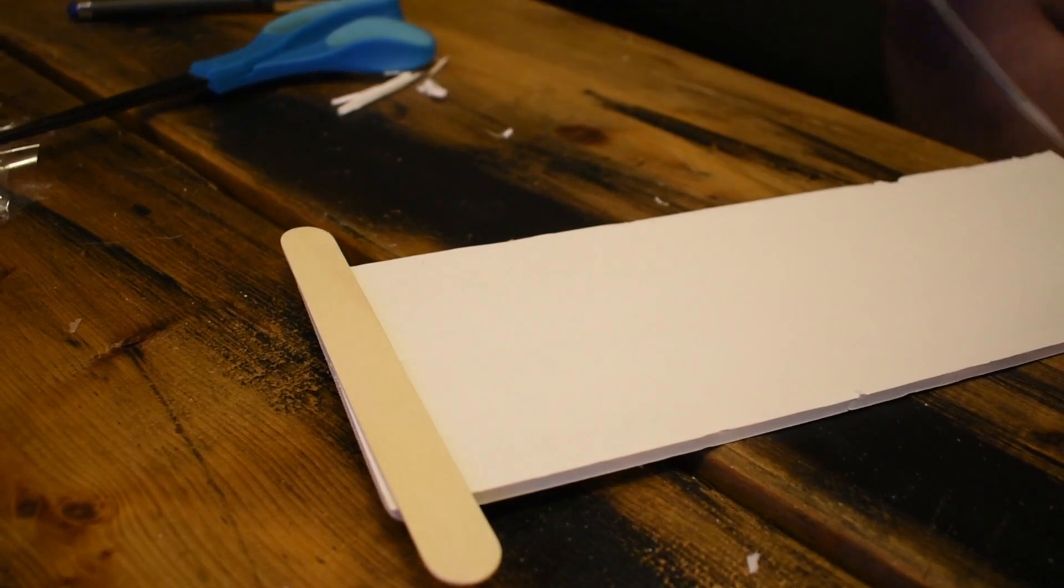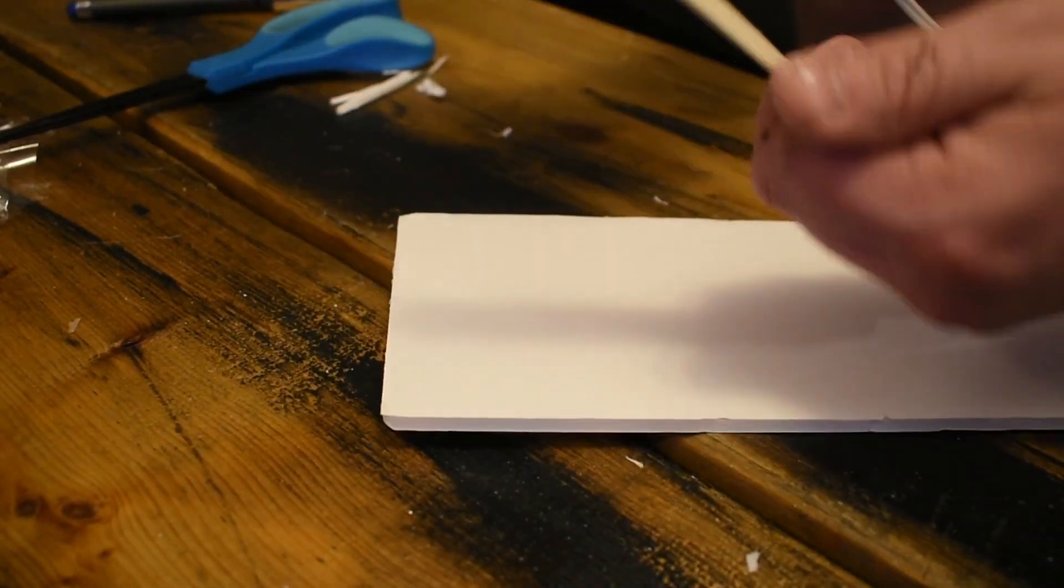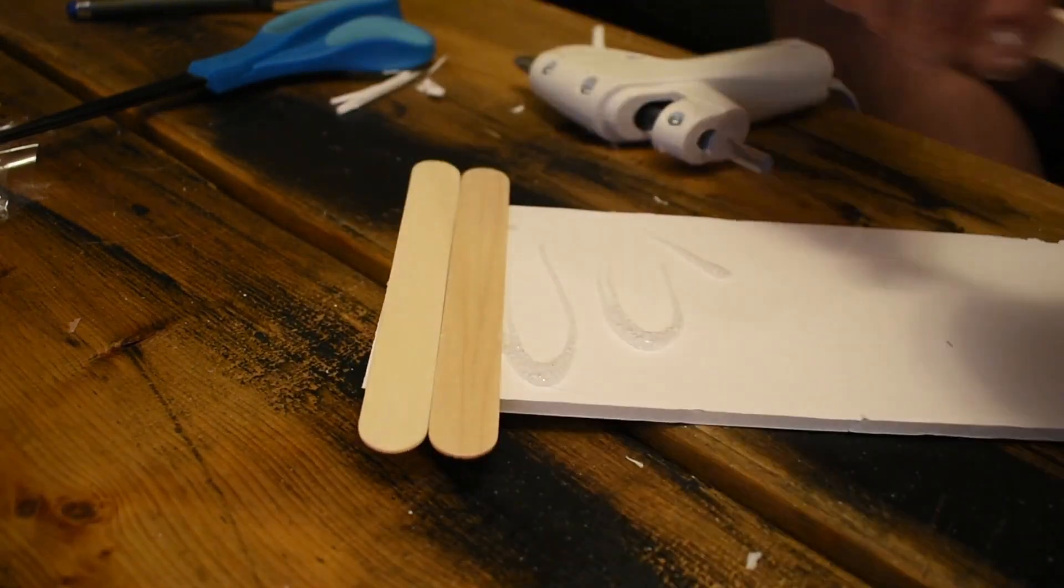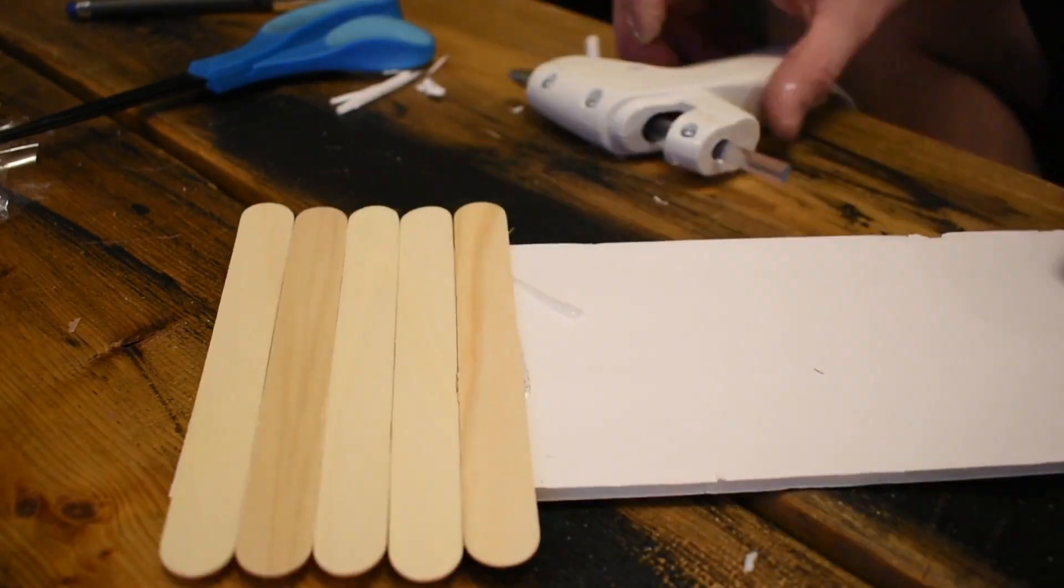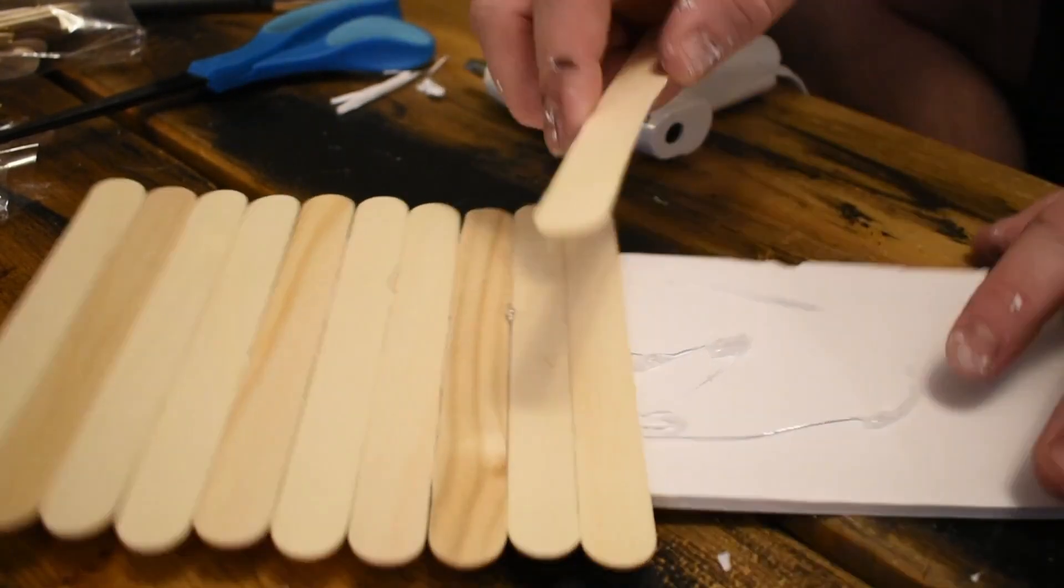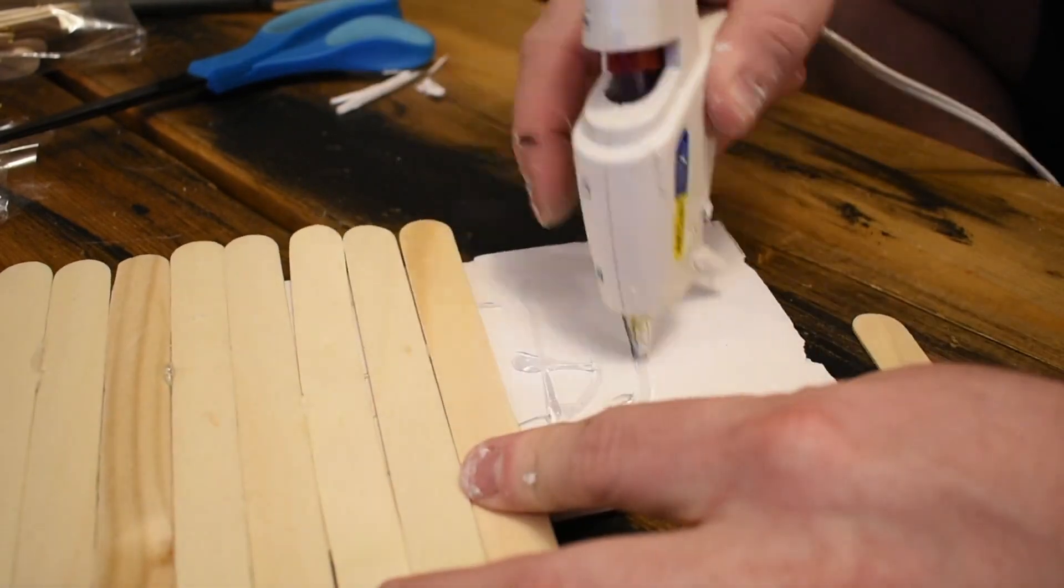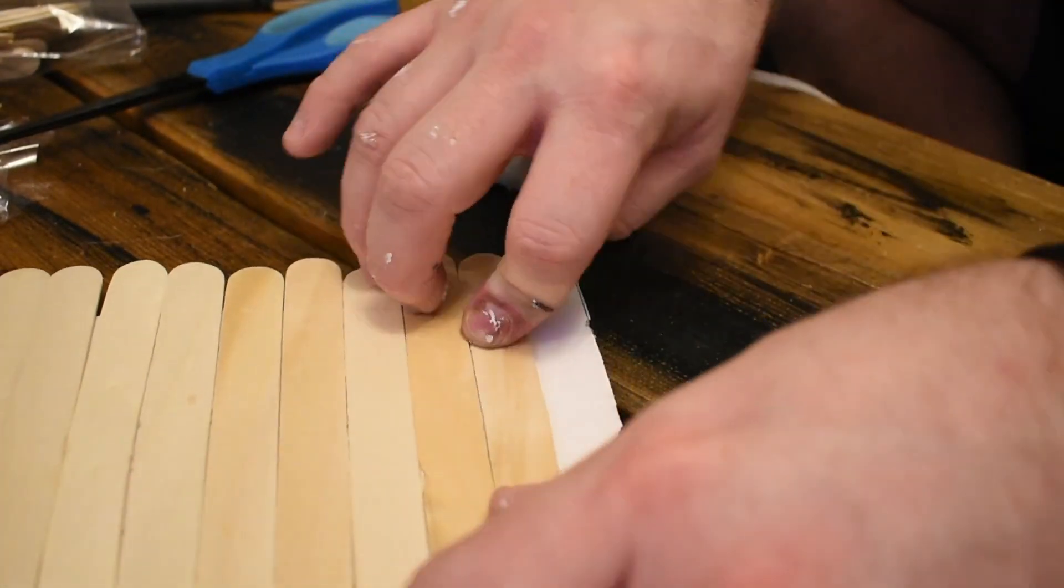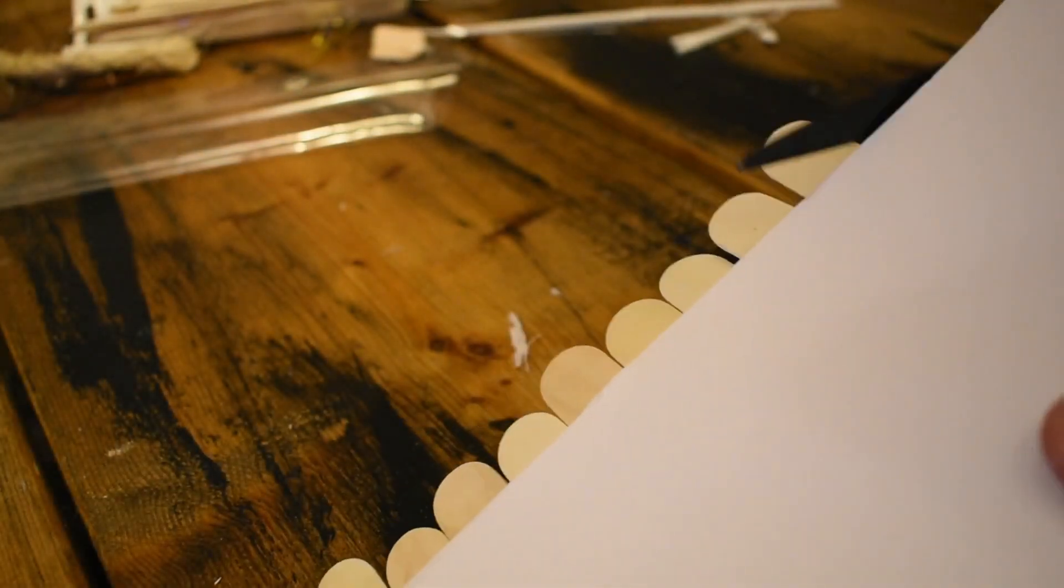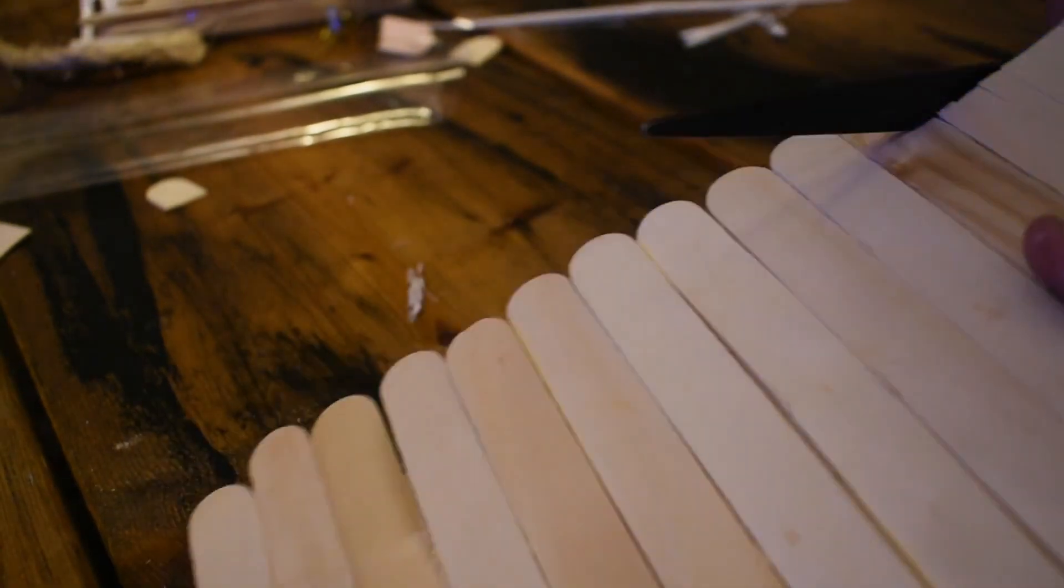Next up, you're going to take a piece of foam board. I did mine 12 inches by about four inches, and you're just going to take that and you're going to start attaching popsicle sticks to it. The popsicle sticks will hang over on the sides of the foam board. We're going to cut those off in just one second.